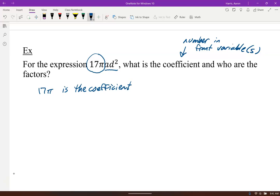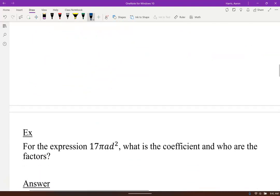The factors are just, I should say, the variables a and d are variables. Who's the factors? Well, it's just everything being multiplied: the 17, the pi, the a, and the d squared. These are all factors, each of those are all the factors. Everything is being multiplied, factors.